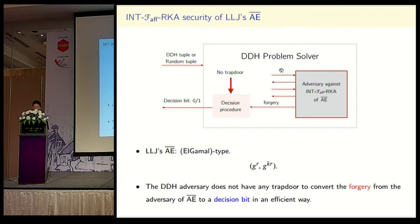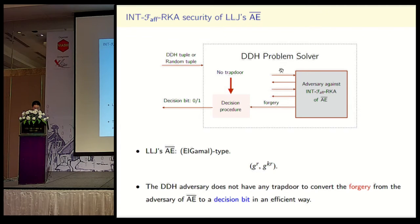LLJ's AEBAR can be regarded as an El-Gamal type. In order to reduce INTF-affine security to the DDH assumption, we need to construct a DDH problem solver who is given a DDH tuple or a random tuple and simulates the INTF-affine security game. However, the DDH problem solver, who does not have a trapdoor, is not able to convert the forgery from the adversary to a decision bit efficiently. This failure in turn affects the KDM-CCA security of the LLJ scheme.